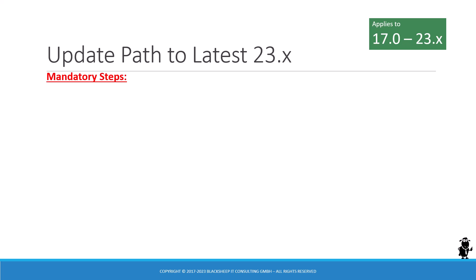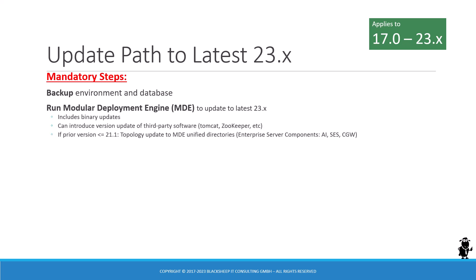There are a few mandatory steps you have to take. You must back up your environment database, then run what's known as the Modular Deployment Engine, or MDE, which handles all the binary changes. Then you run the post-install database update — this is mandatory, and it updates your database. That's why you take a backup with schema, seed data, and manifest data, which brings in the mandatory content Oracle has developed since your last version.